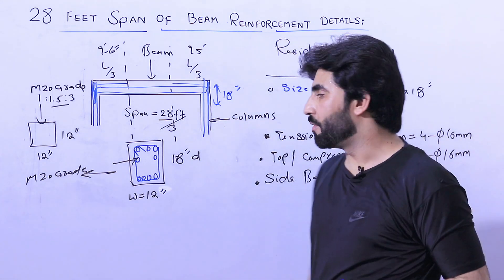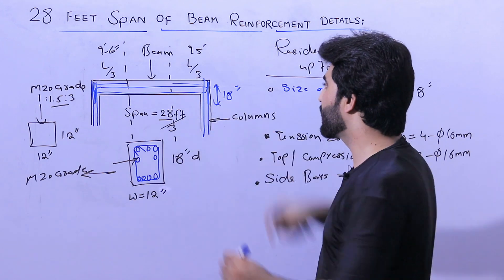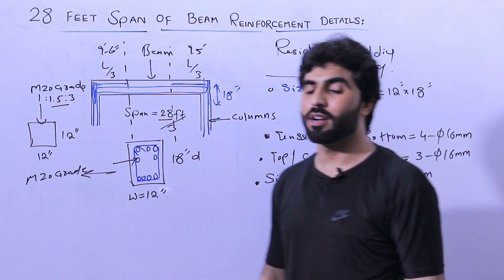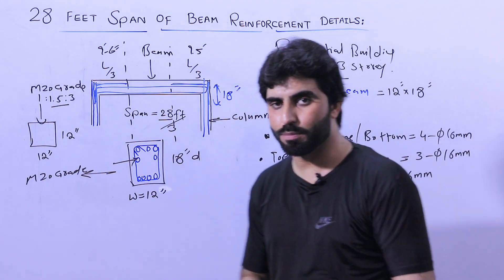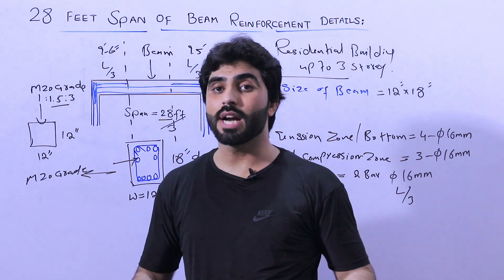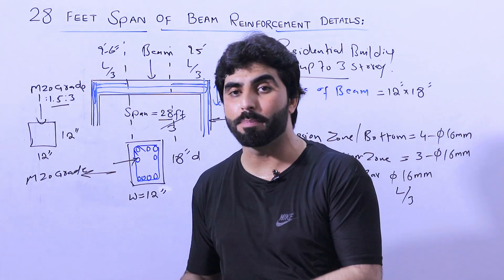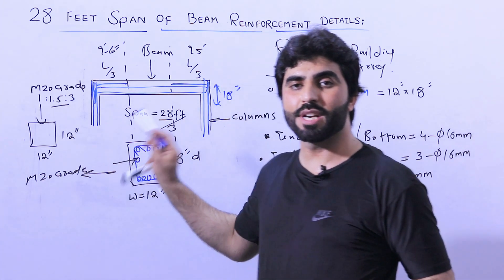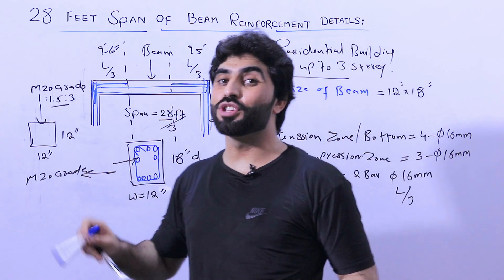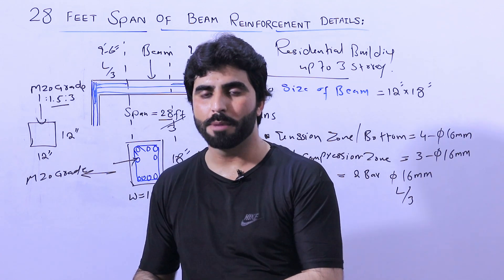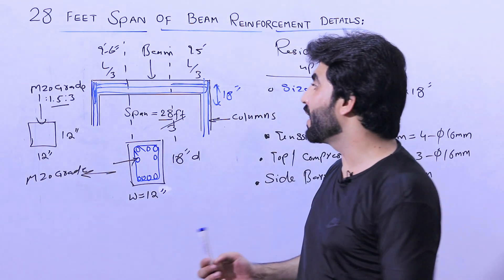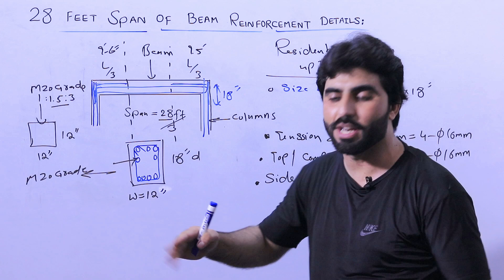So you can see: 4 bars at the bottom, 2 at the top, and 2 side bars. We also provide top bars or crank bars to resist negative bending moment. Lapping length should not be provided at the beam bottom — especially at the tension zone — because concrete is weak in tension and there are more chances of cracking. The extra steel rod should be provided at the distance of L by 4 due to negative bending moment.